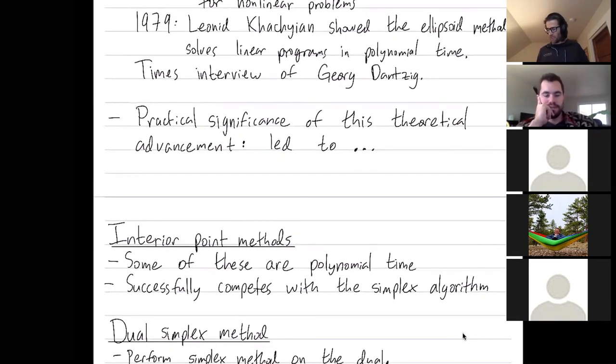So interior point methods are, in some sense, the best of both worlds. Some interior point methods are polynomial time in the worst case, and interior point methods can compete with the simplex algorithm on some problems. I think the simplex algorithm is still faster on most problems, but maybe 10 to 25% to 40%, I really don't know, of problems interior point method is actually faster than the simplex algorithm.